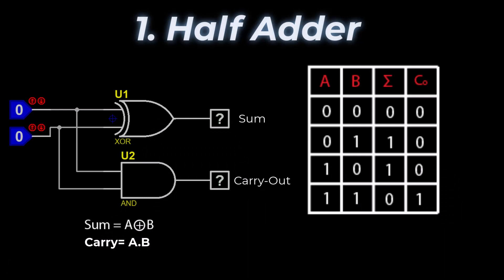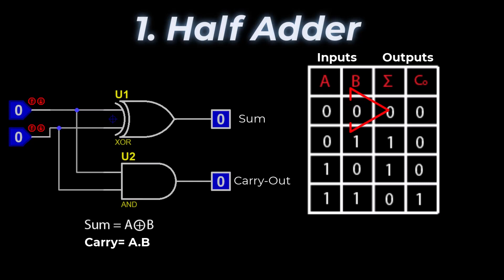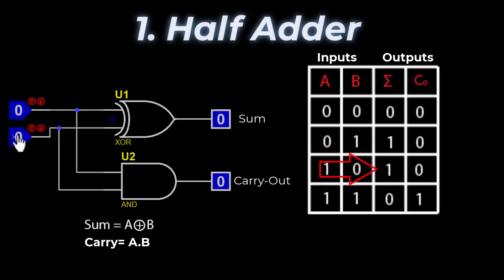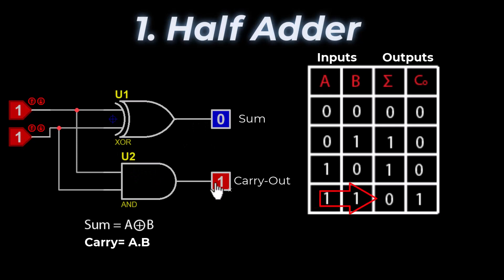Looking at the half adder truth table with inputs A and B and outputs sum and carry out: applying zero and zero gives sum = 0, carry out = 0; applying zero and one gives sum = 1, carry out = 0; applying one and zero gives sum = 1, carry out = 0; applying one and one gives sum = 0, carry out = 1.